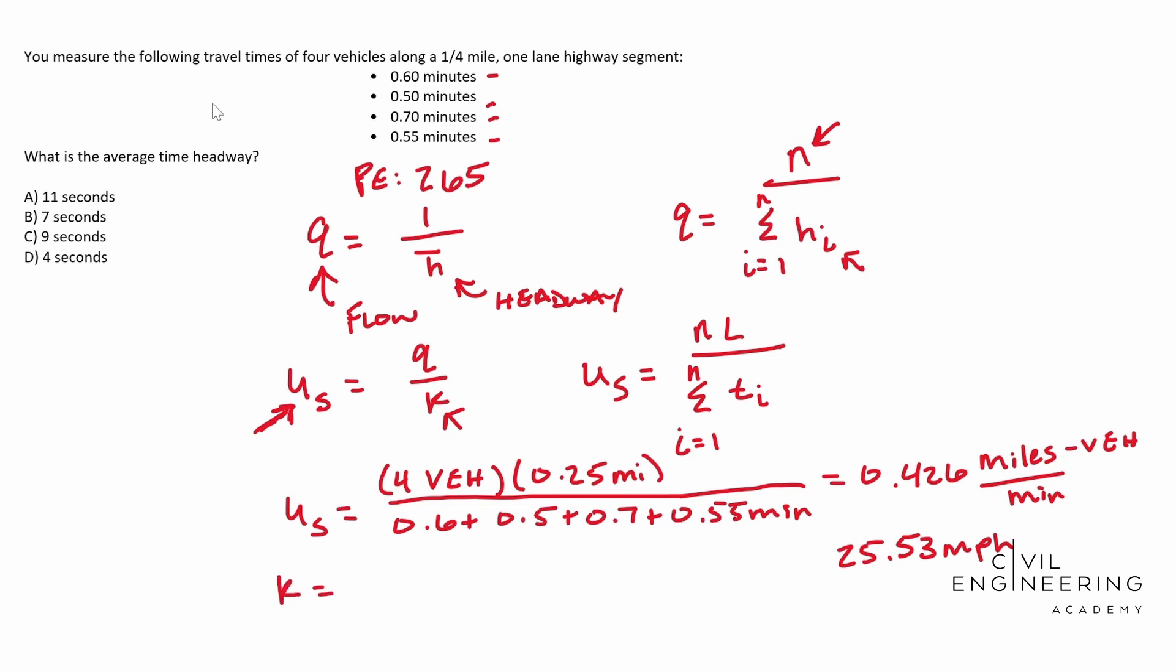As I said earlier, our density is simply the number of vehicles over our distance. And so we have four vehicles and we have a quarter of a mile segment, 0.25 miles. This guy ends up being 16 vehicles per mile.